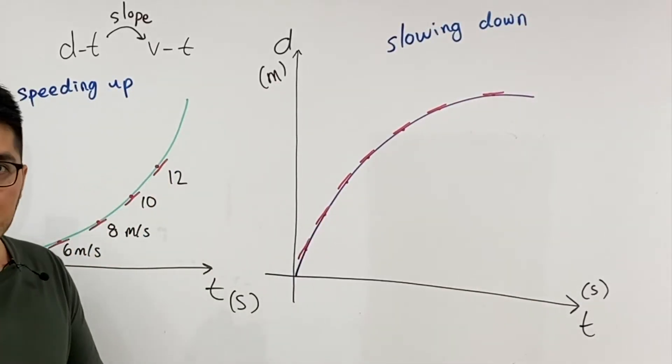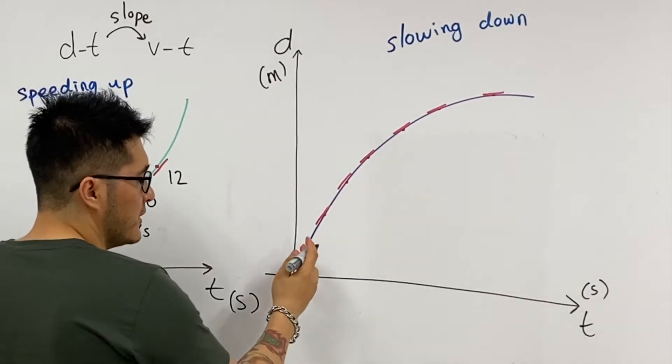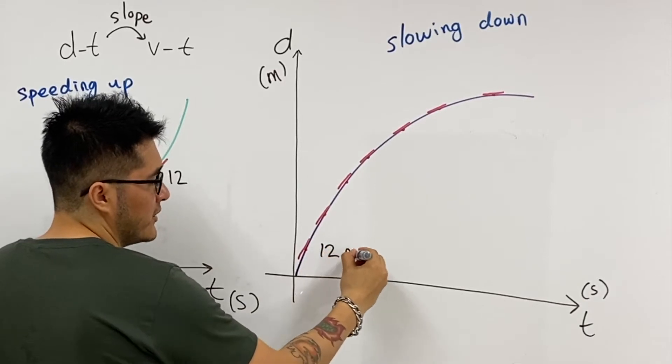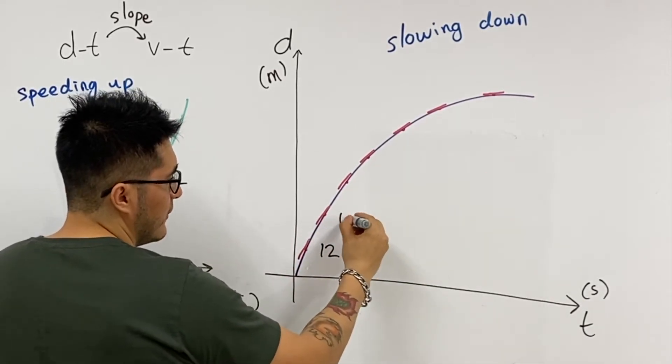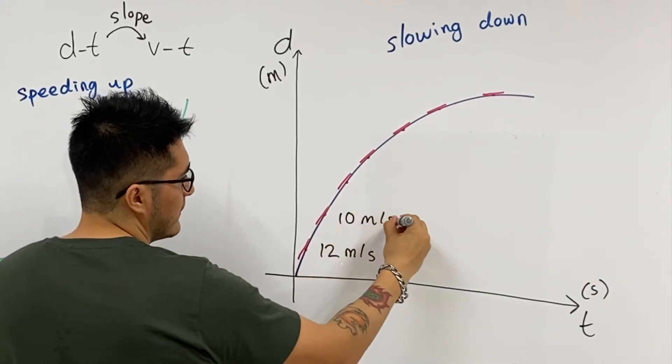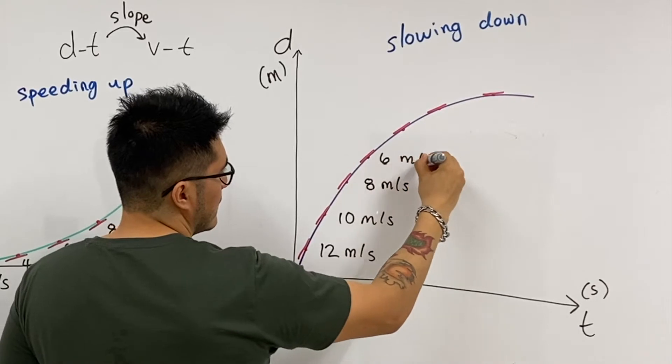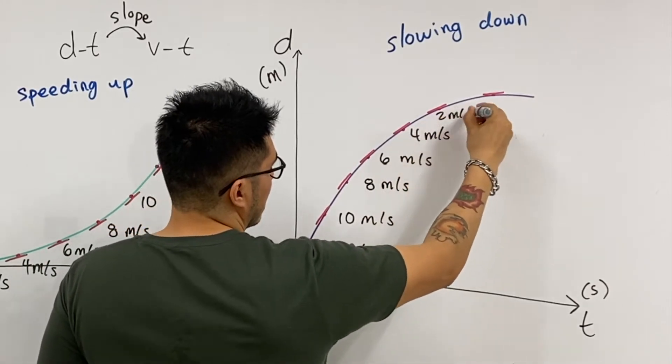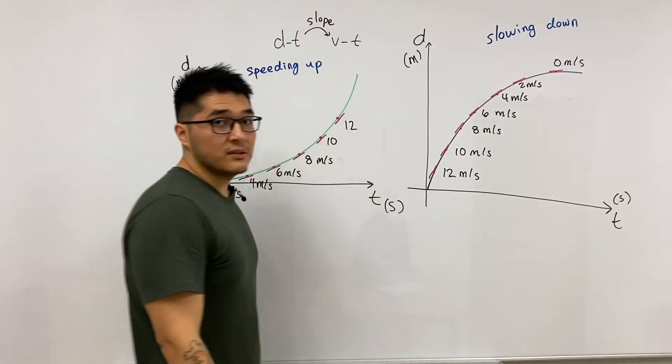But we can do better, let's just put some numbers, so that way we can see it in a numerical way. When it starts out very steep, let's give it a number of 12 meters per second, and because it gets less steep with time, we can go 10 meters per second, 8 meters per second, 6, and notice that the top is more or less flat, so we can approximate it to 0 meters per second.